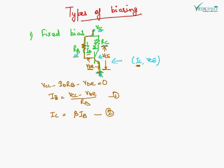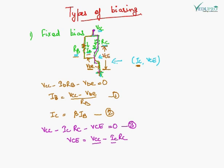Now applying KVL in the output loop — starting from VCC, through RC, through the collector-emitter of the BJT, to ground — the equation is: VCC minus IC·RC minus VCE equals zero. Therefore, VCE equals VCC minus IC·RC. Since we know VCC, IC, and RC, we can calculate VCE. This gives us both coordinates of the operating point.